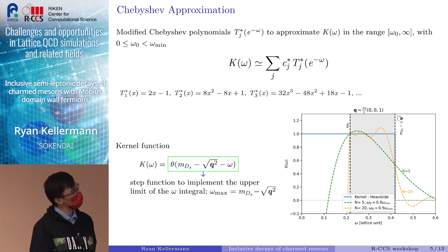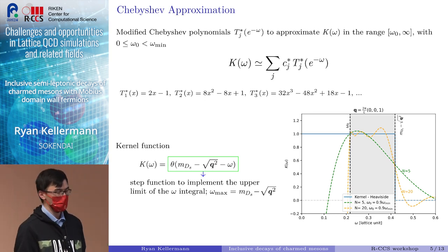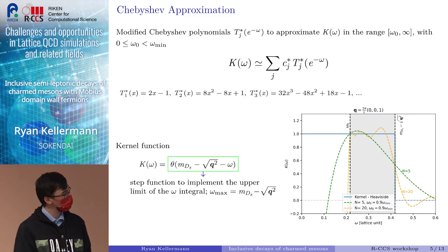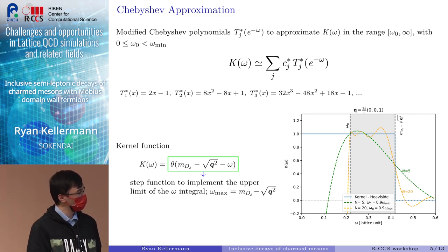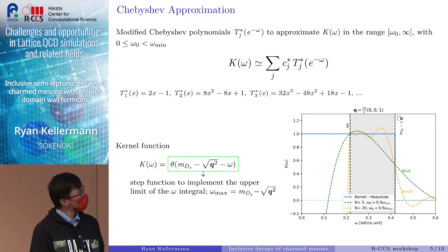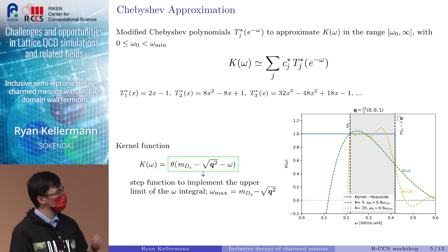The Chebyshev polynomials T_j^*, the first couple of polynomials I've given here, but the main takeaway is that the Chebyshev polynomial of order j always corresponds to a polynomial of the same order. Now that we have a possible way to approximate our kernel function, the next question is, how do we choose our kernel function? The easiest or most naive way would be to choose our kernel function to be the Heaviside step function.